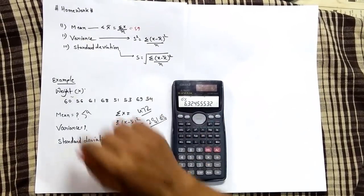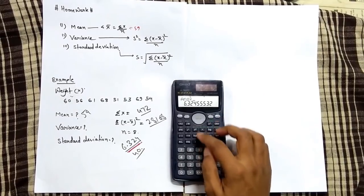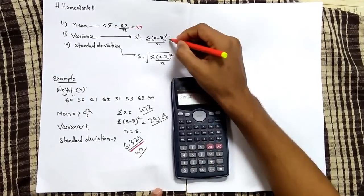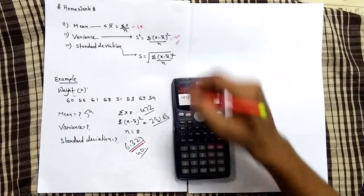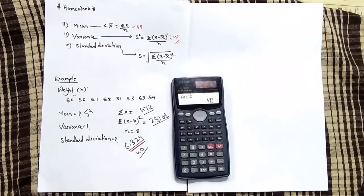Now you want to calculate your variance, just square it. You will get your variance is 40. Hope you understood.